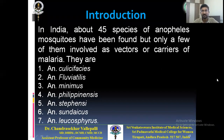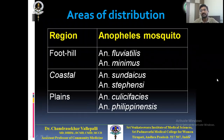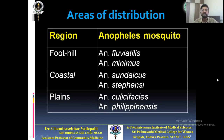Depending on areas of distribution, Anopheles species are divided by region. Foot-hill species: Anopheles fluviatilis and Anopheles minimus. Coastal region species: Anopheles sundaicus and Anopheles stephensi. Plains species: Anopheles culicifacies and Anopheles philippensis. These are very important to remember, as you will get many questions about them in your objective-type examinations.